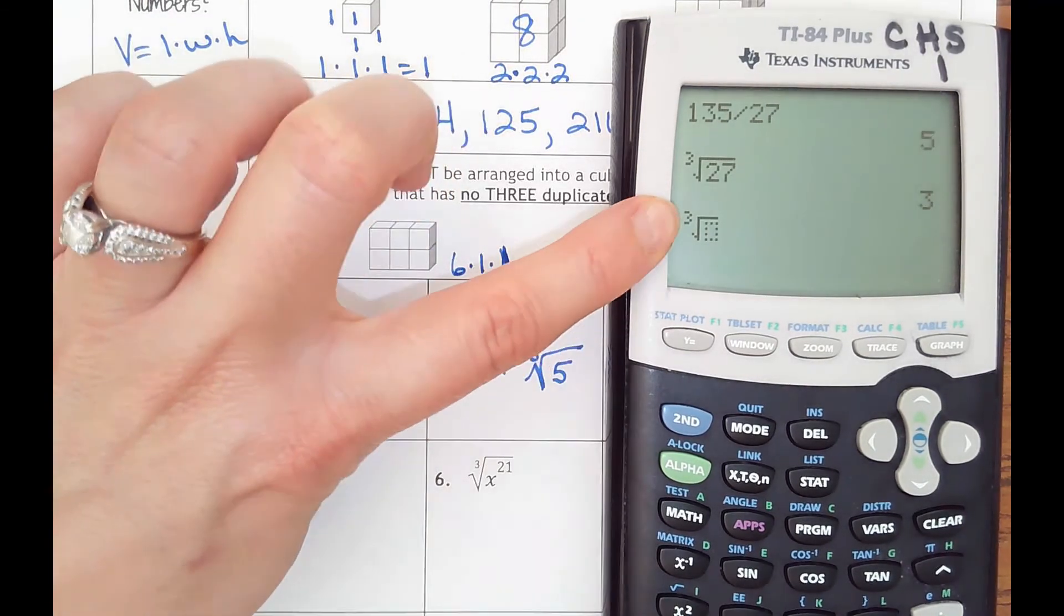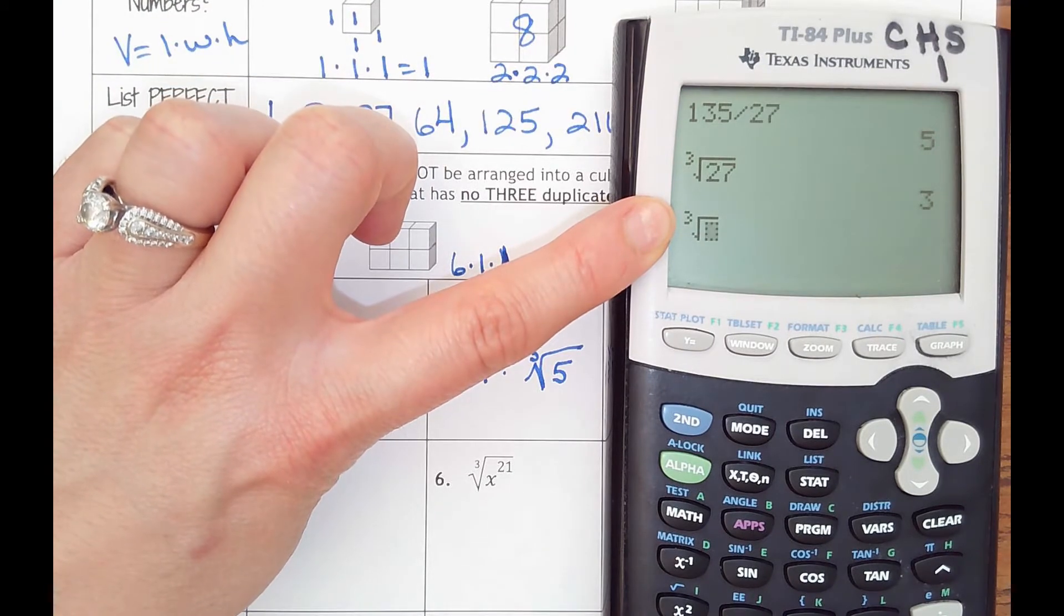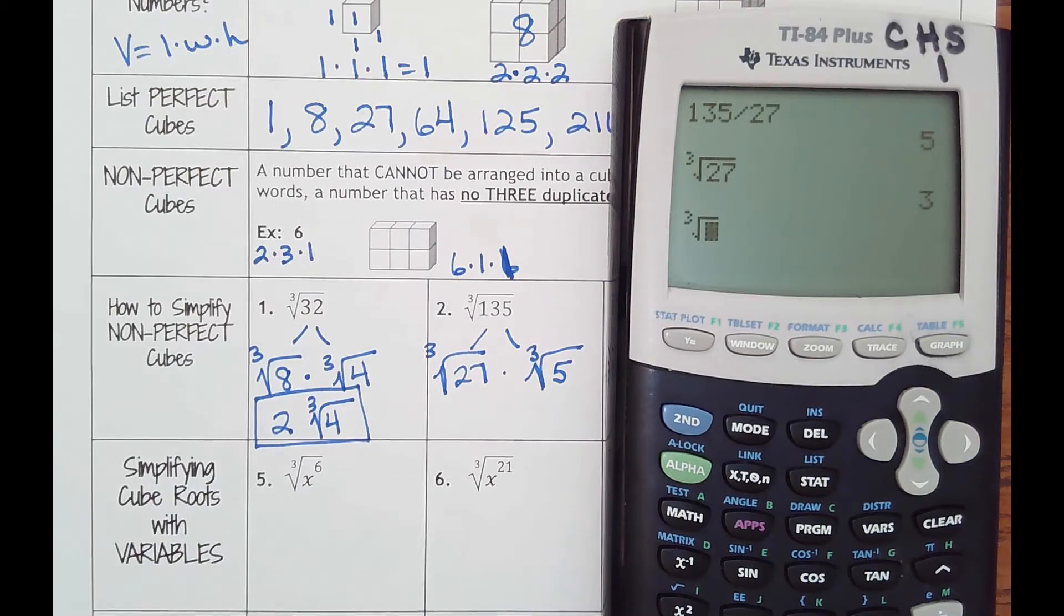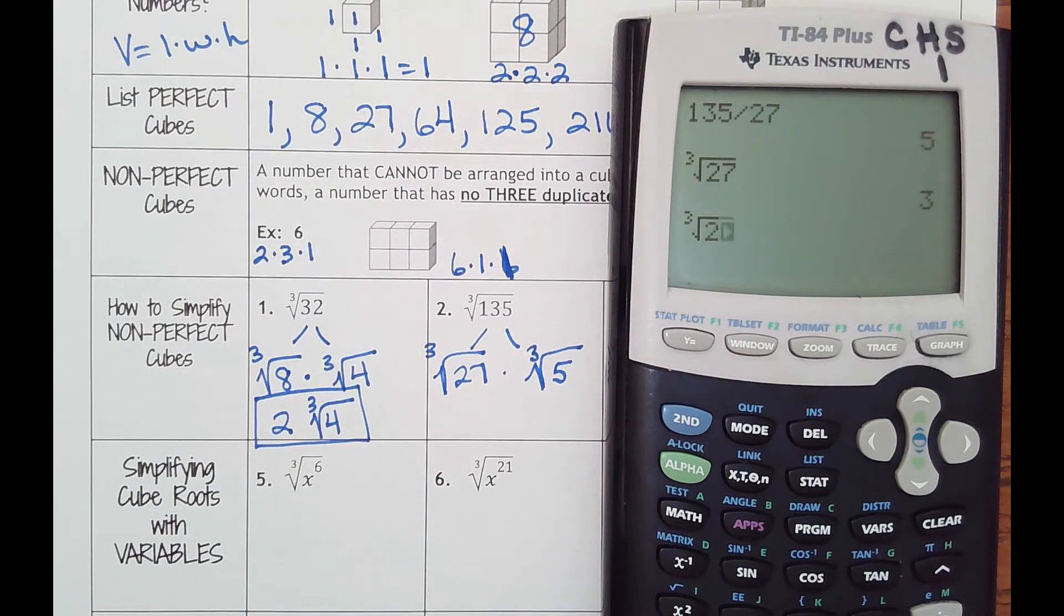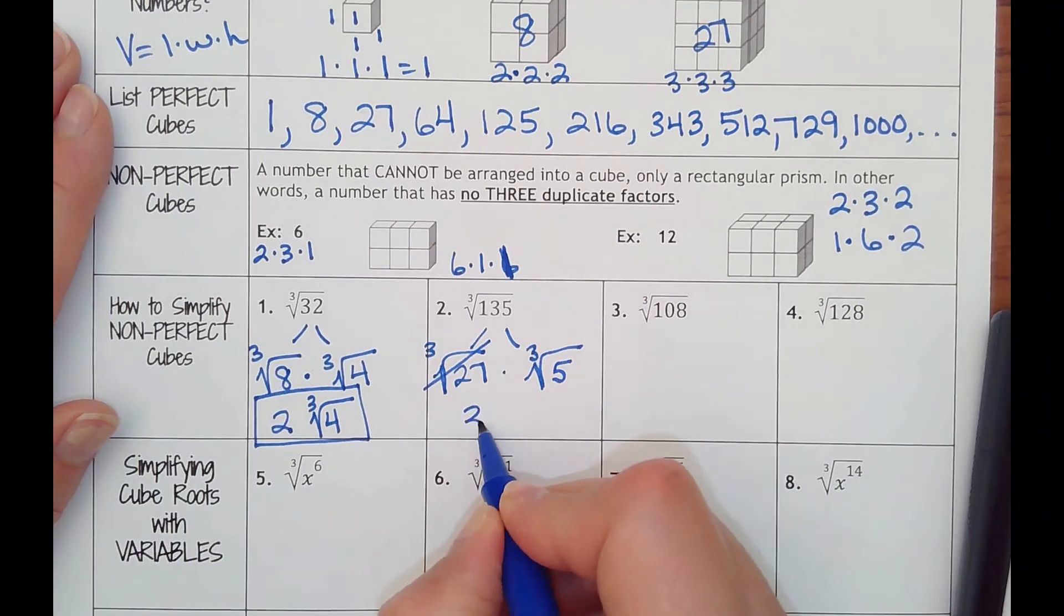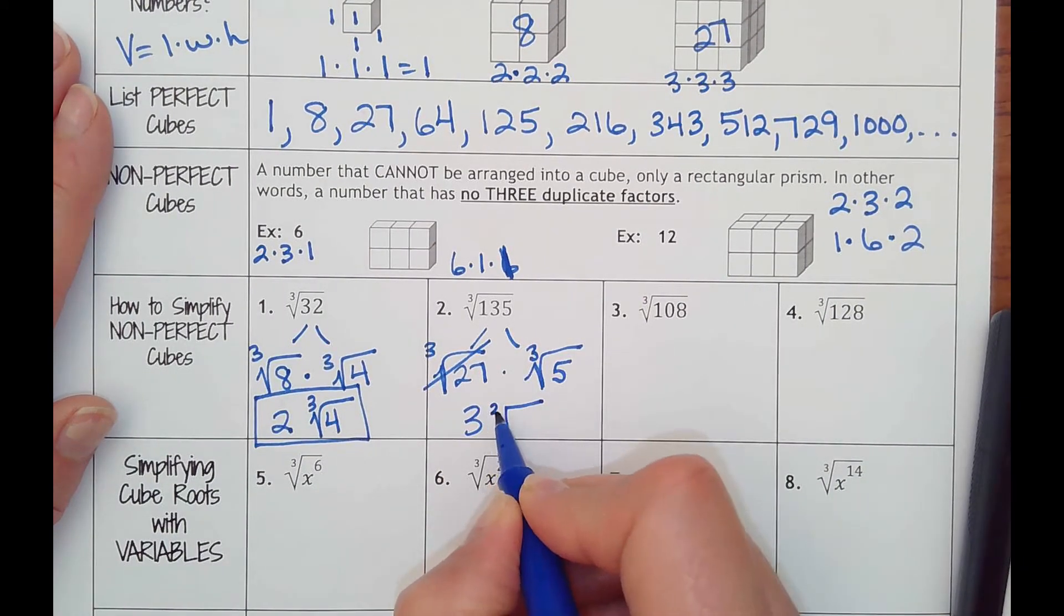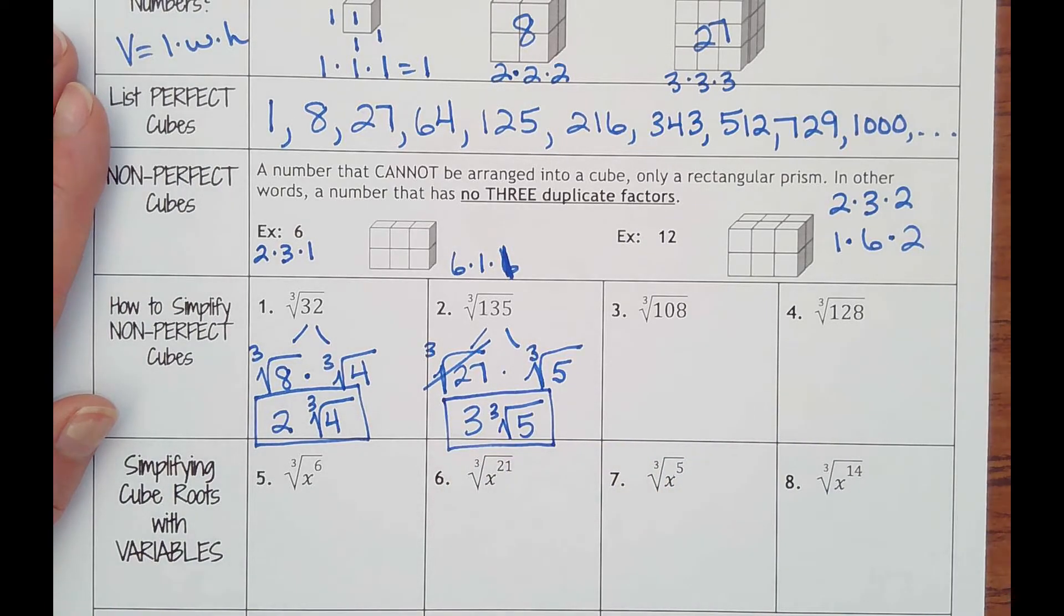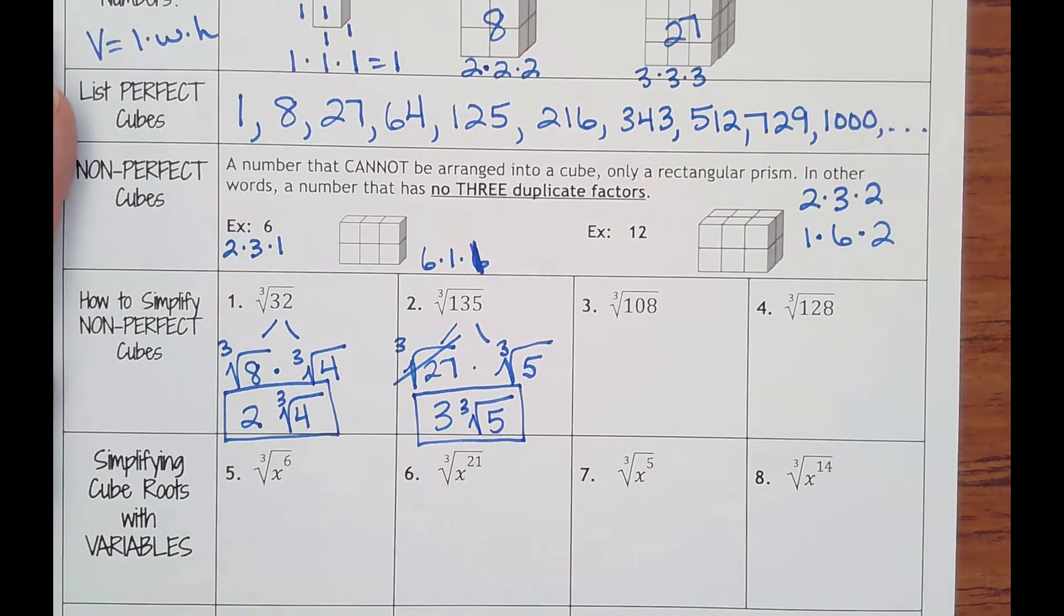And then you could put 27 in and it tells me it's three. Or hit three first, math, option five which has an x in front of a radical. That is when you want to use any number index. So when we get to fourth roots and fifth roots and so on, then you can use that technique. I could put in 27, that tells me it's three.